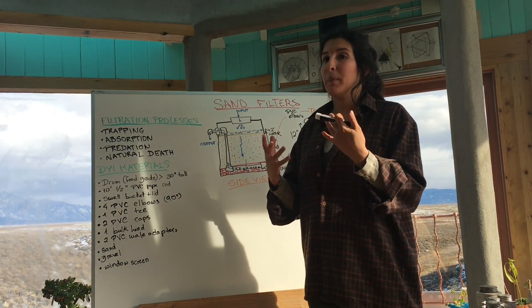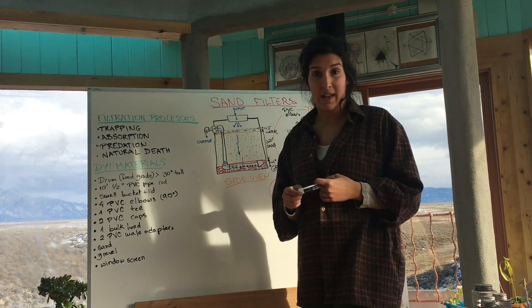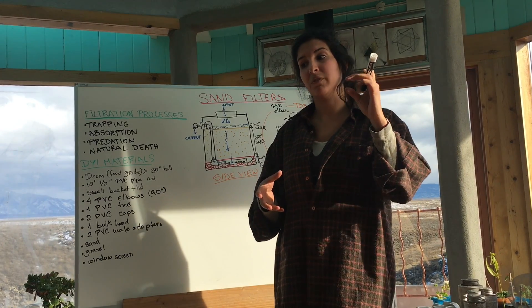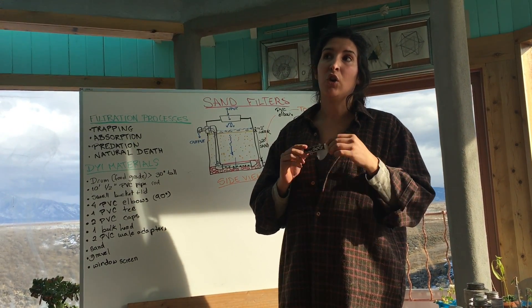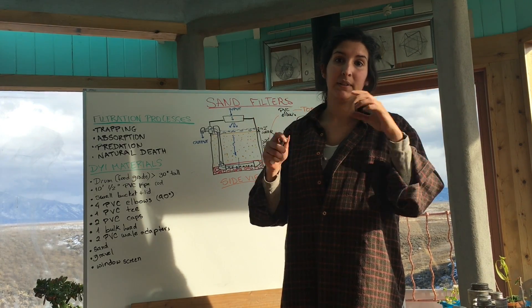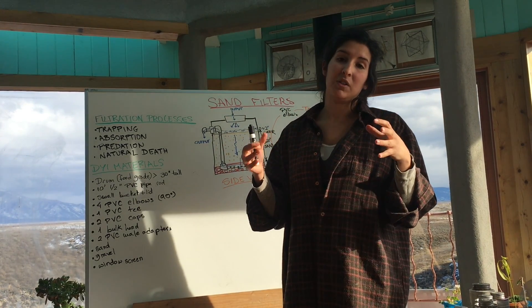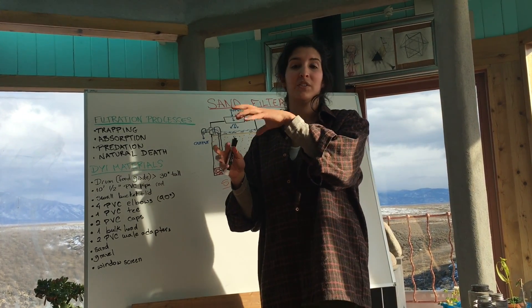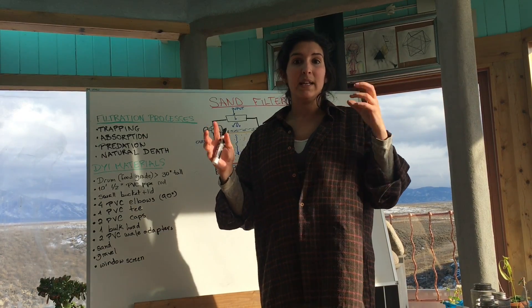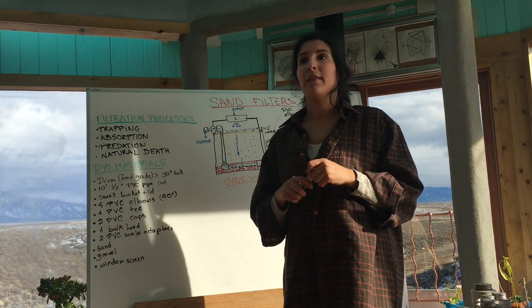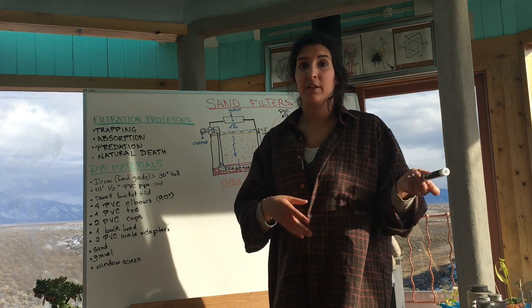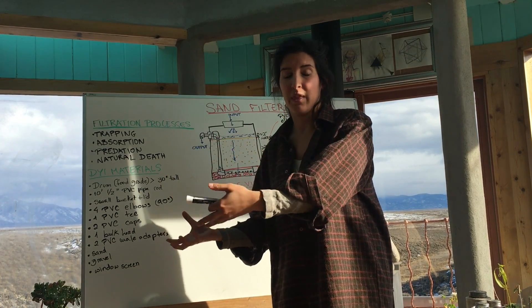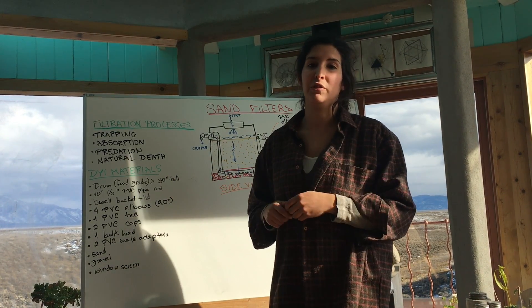The way they work: their main component is sand, and most of the filtration — some of it happens in the sand, but most of it happens right on top of the sand. This is called the bio layer. On the bio layer there is a little ecosystem that establishes basically microorganisms that live on the surface of the sand, that eat and predate on the viruses, bacteria, and other microorganisms that come with the water that you want to filter.